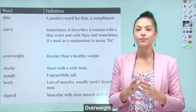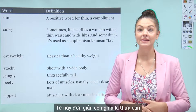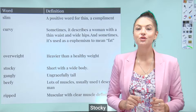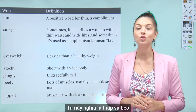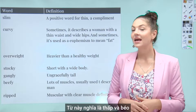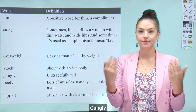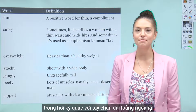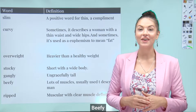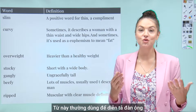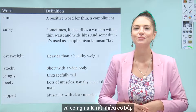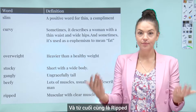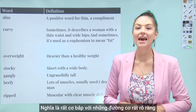Overweight simply means heavier than a healthy weight. Stocky means you are short with a wide body. Gangly means you are ungracefully tall, a little awkward and have long limbs. Beefy is normally used to describe a man and means he has lots and lots of muscles. And our final word is Ripped — this means you are muscular with clear muscle definition.